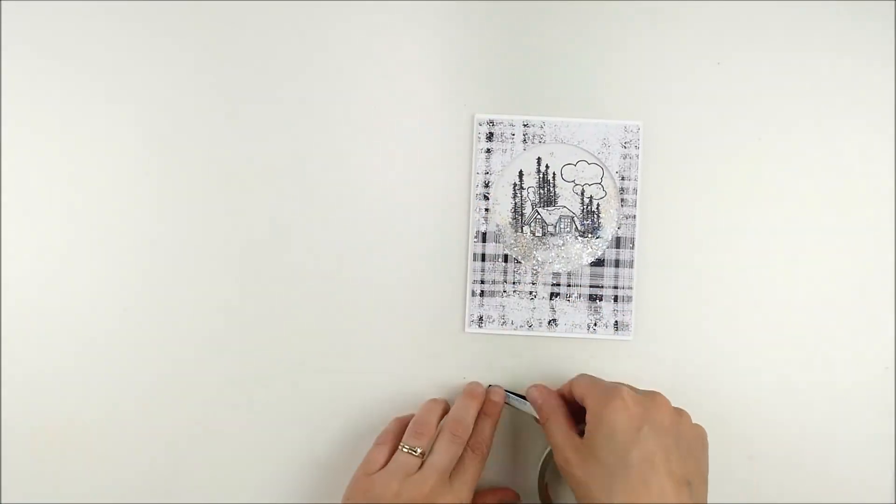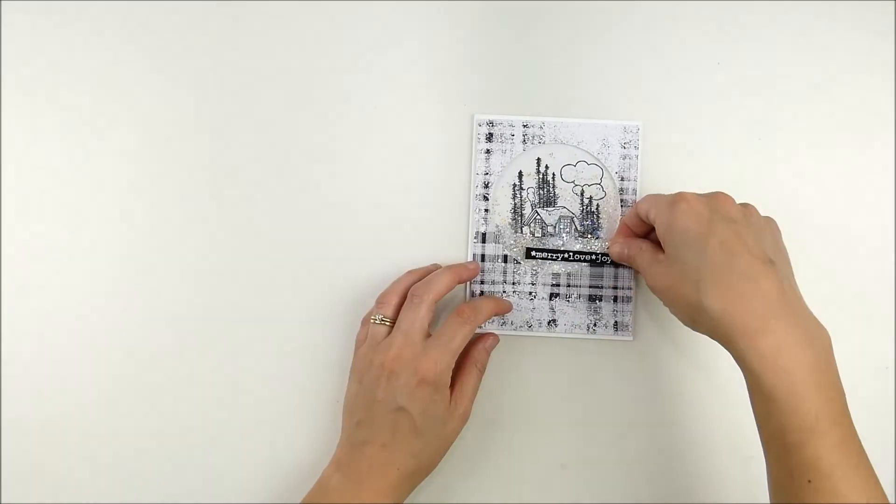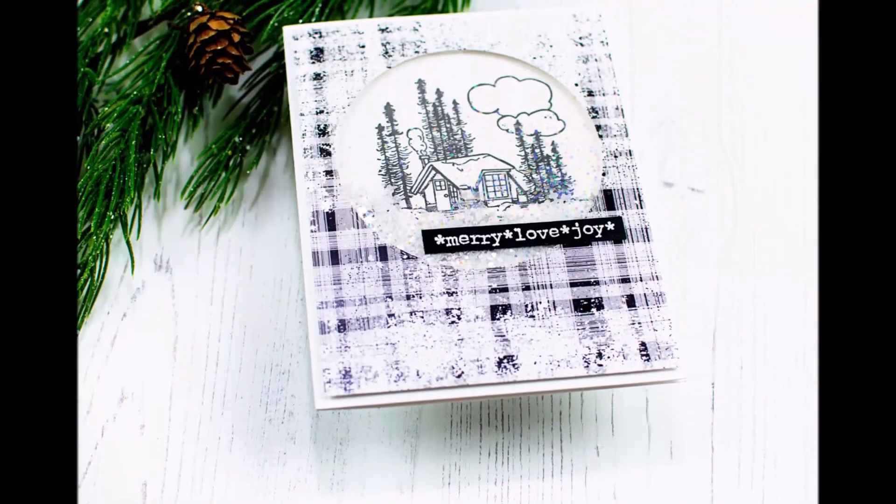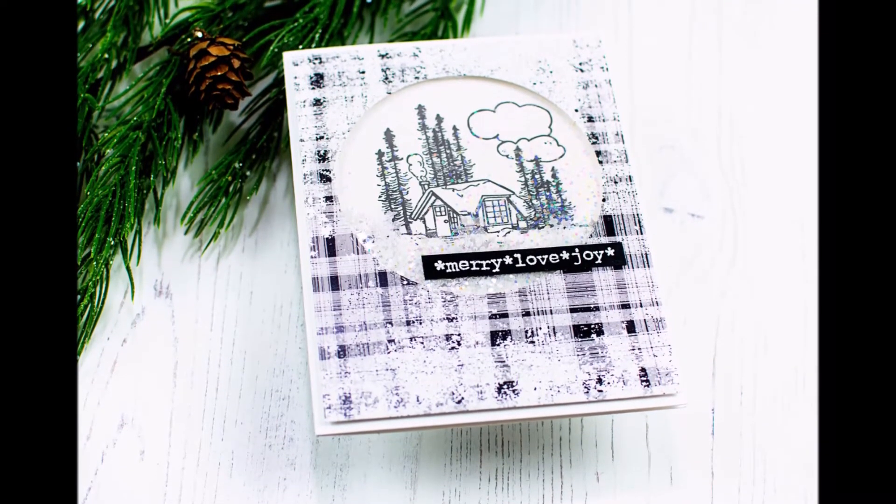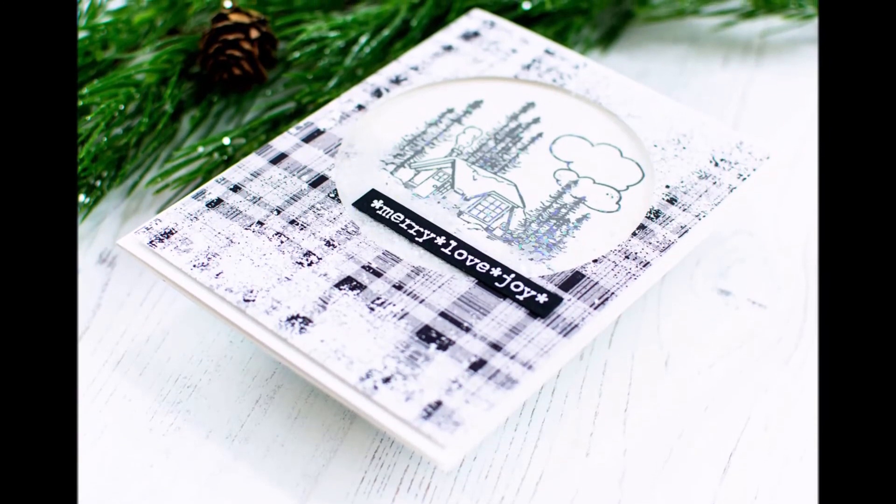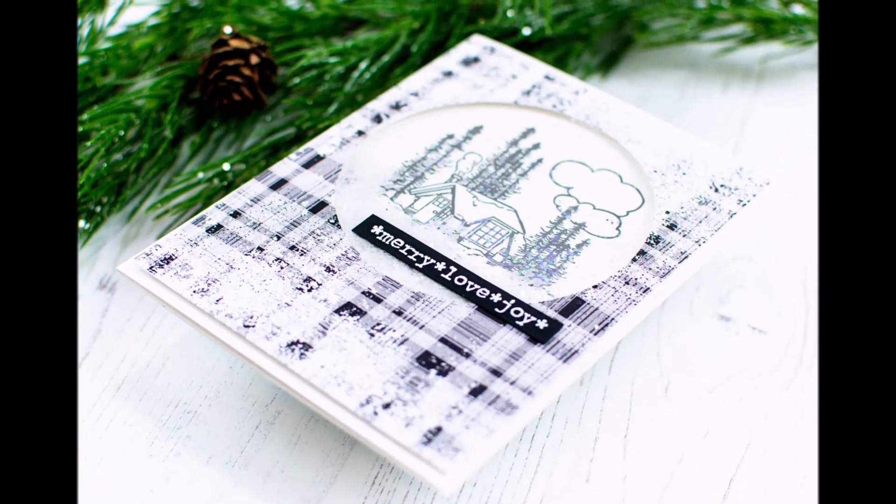So I trimmed it down to a thin strip and trimmed the edges off and just adhered that in place. And there you go, a fun little snow globe style shaker card with that fun little mountain scene from this stamp kit. Thanks so much for coming by. I hope you enjoyed. Have a wonderful day.